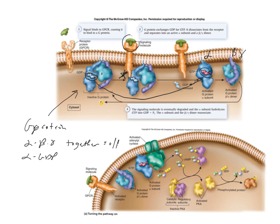So to summarize: when all three subunits are together and alpha has GDP, they are off. When alpha has GTP and the subunits have separated, they are now on. This activated alpha G protein with GTP then moves on and activates adenylyl cyclase.